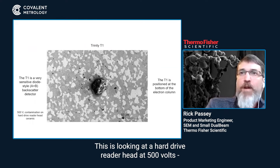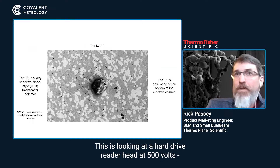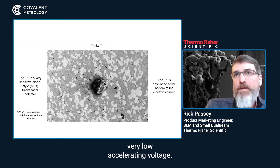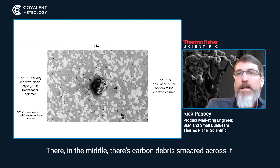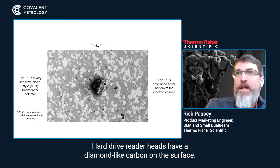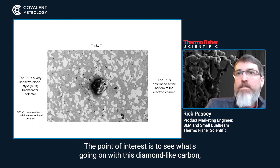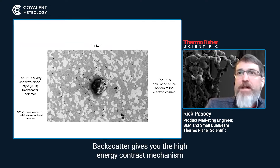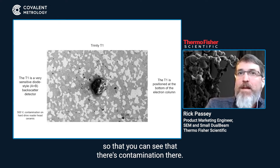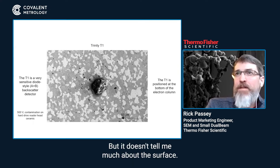This is looking at a hard drive reader head at 500 volts — very low accelerating voltage — giving a nice backscatter image. There's a carbon particle in the middle with some carbon debris smeared across it. Hard drive reader heads have a diamond-like carbon on the surface, so the point of interest is to see what's happening with this diamond-like carbon, not the ceramic underneath. Backscatter gives you the high-energy contrast mechanism, so you can see contamination there, but it doesn't tell much about the surface.